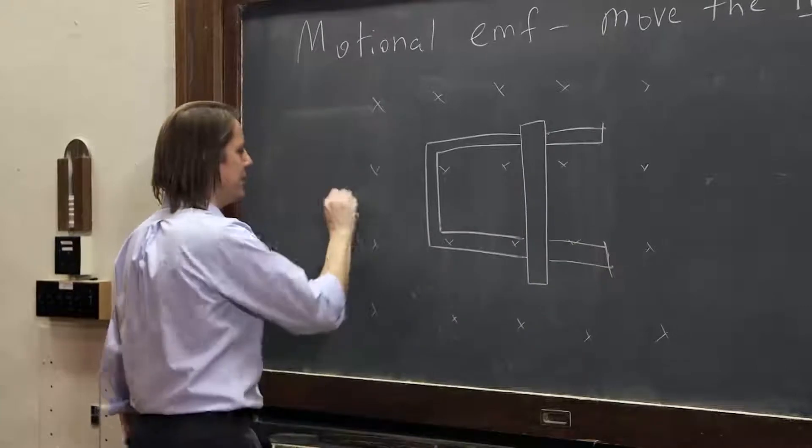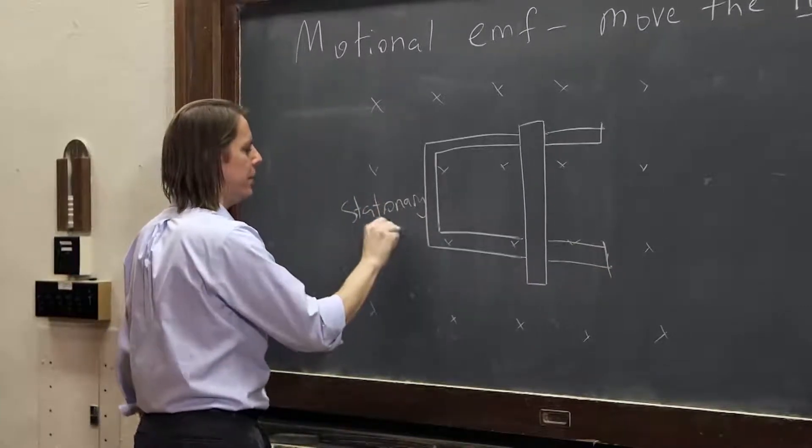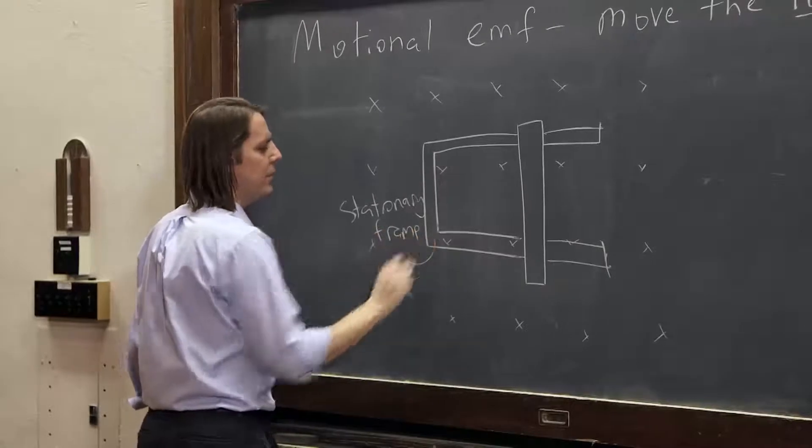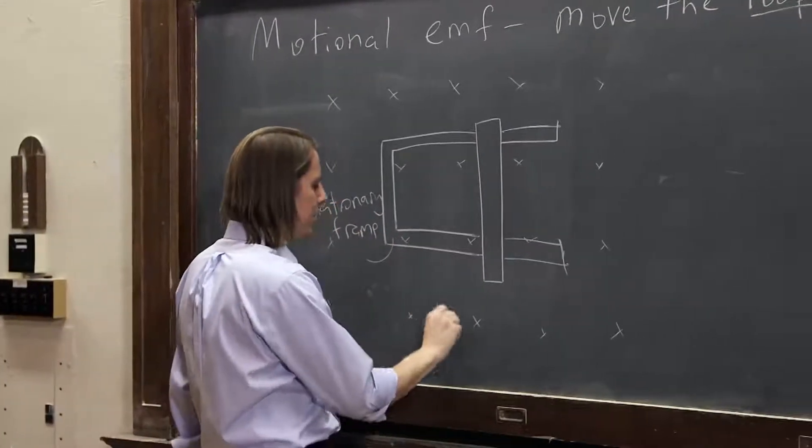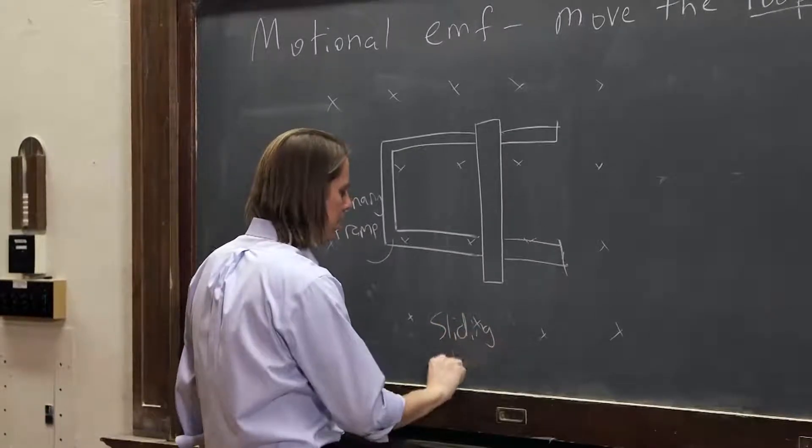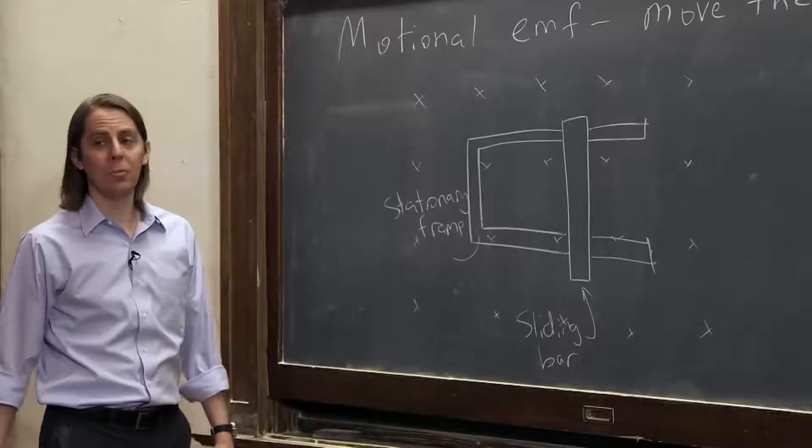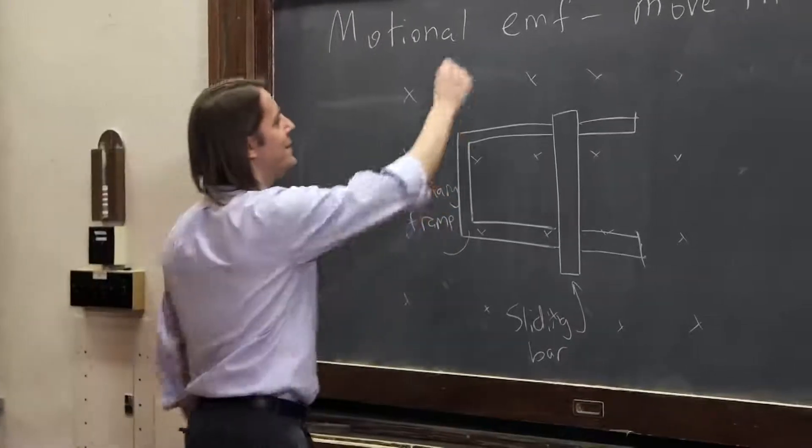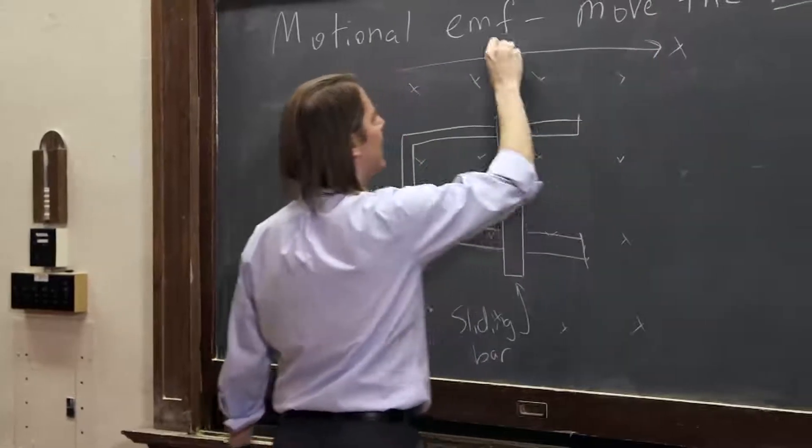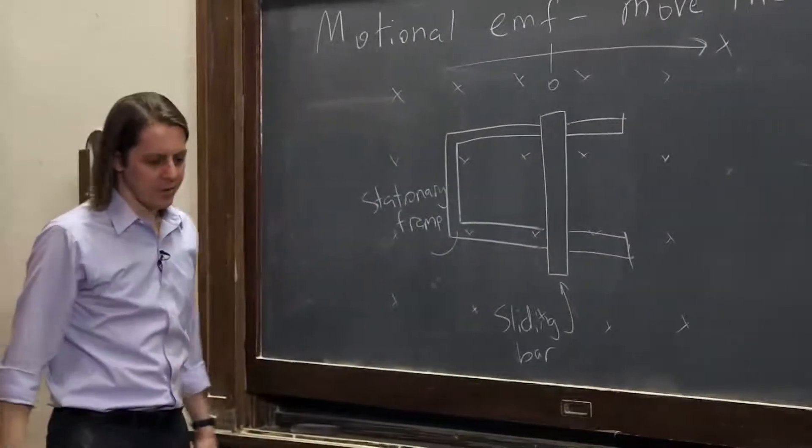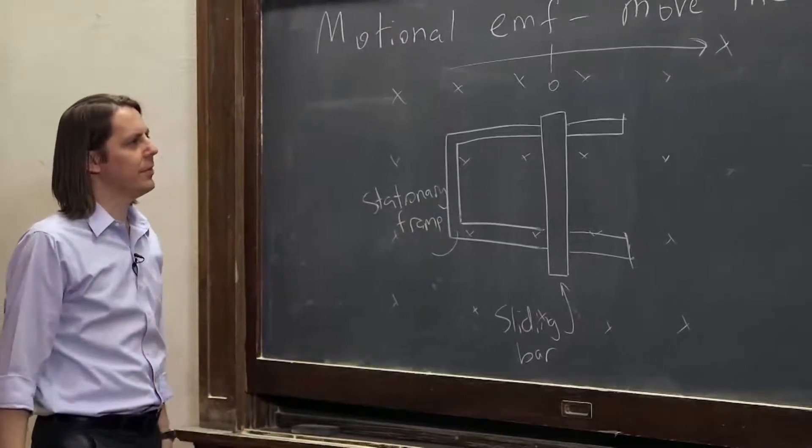So this is a stationary frame, and it's metal. You know, it's a conductor. And this is a sliding bar right there. So now only one part of the loop can move. This, we'll say, is the x-axis like that. And we'll call this the origin when it first, we'll call that zero. It's starting at zero, OK?